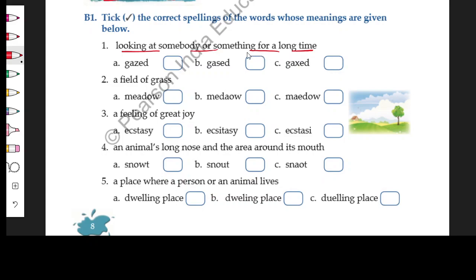For example, looking at somebody or something for a long time - the word that is called gaze. So gaze - how is the spelling? That is something you have to decide. You have to decide or choose which is the correct spelling of gaze.